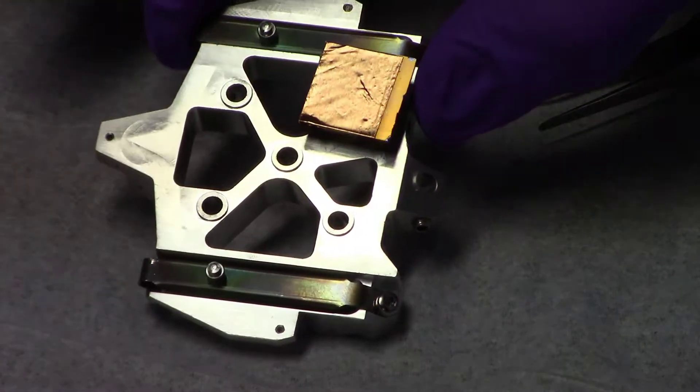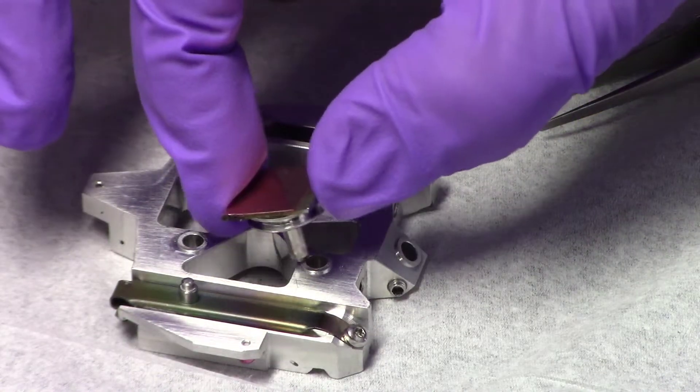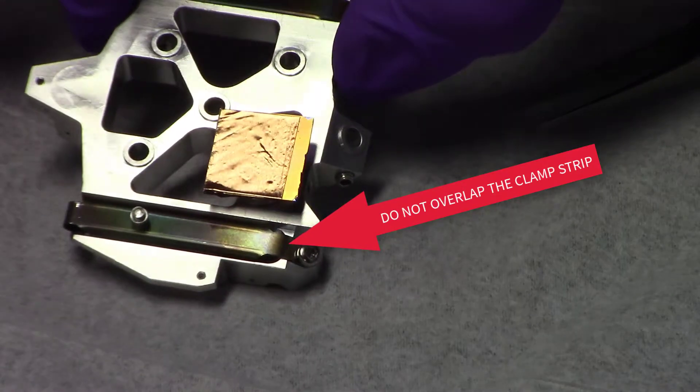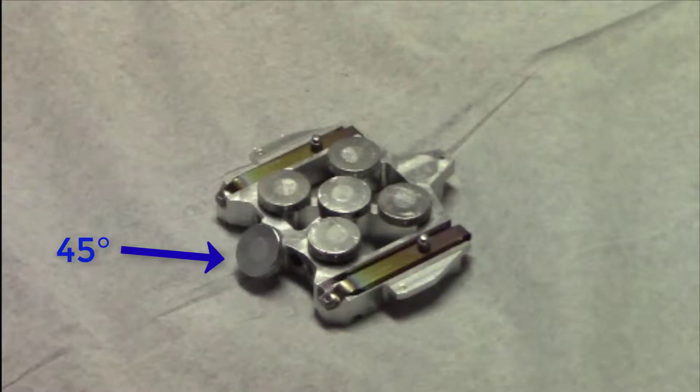Next, you will want to consider the placement of your samples in the shuttle, making sure not to overlap where the shuttle clamps. You can load up to 6 samples at a time, including the 45-degree position.